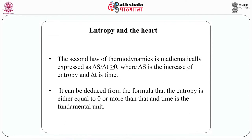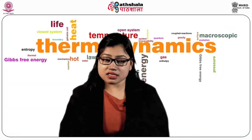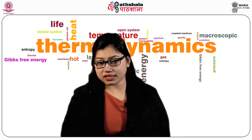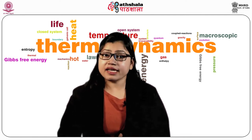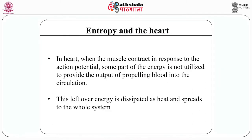Now we are going to study about entropy and the heart. The second law of thermodynamics is mathematically expressed as ΔS/ΔT ≥ 0, where ΔS is the increase in entropy and ΔT is the time. This means the system will have increased entropy with increase in time. Entropy is greater in structures that are more randomly organized and move independently. In the heart, when the muscles contract in response to the action potential, some part of the energy is not utilized to propel blood into the circulation.